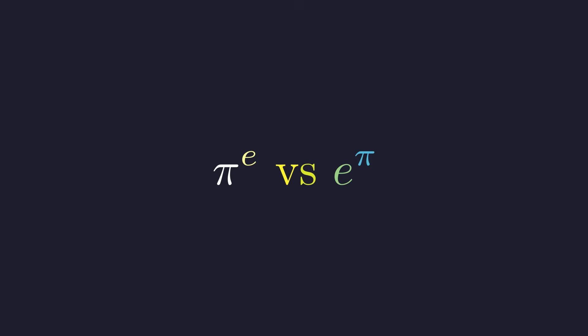At first glance, this might seem like we'd need to crunch some numbers, but there's actually an elegant path through this that reveals something deeper about the structure of mathematics itself. The direct approach of computing these values would miss the point entirely. Instead, we're going to use a technique that mathematicians love. When faced with something complicated, transform it into something simpler.